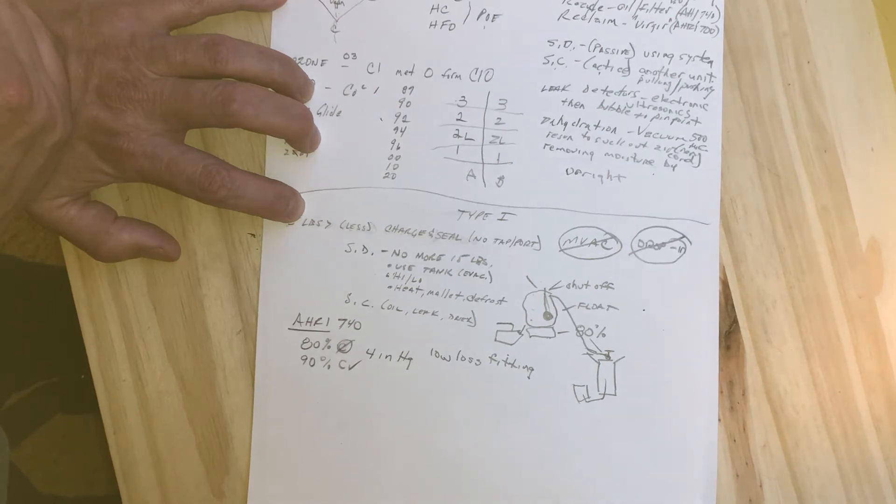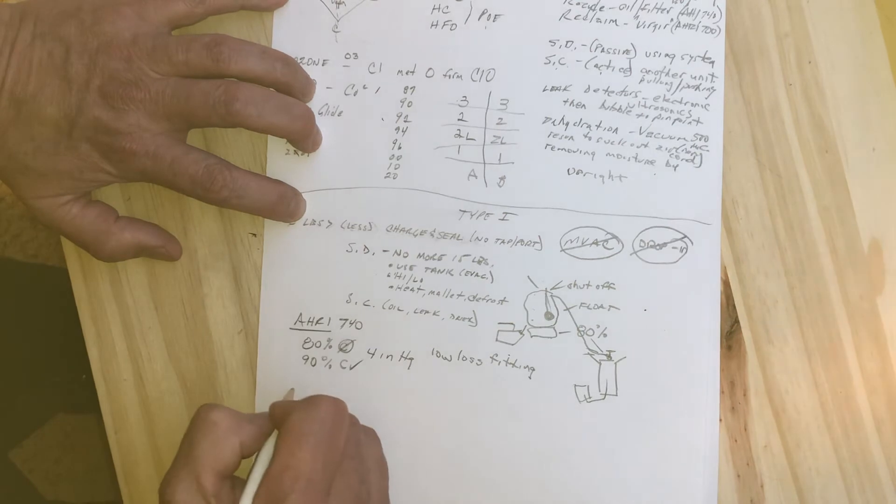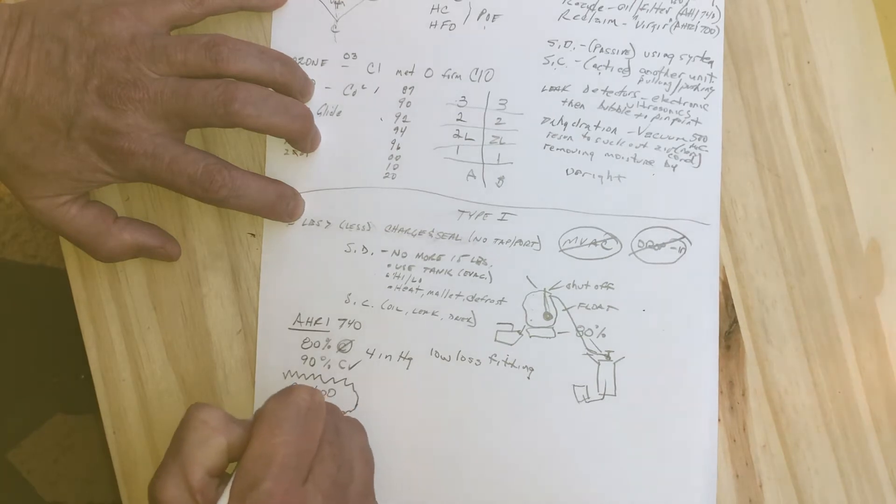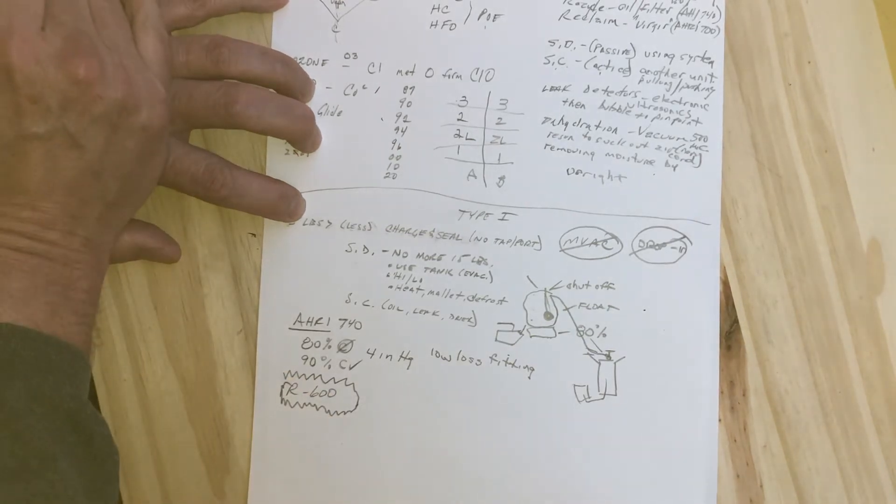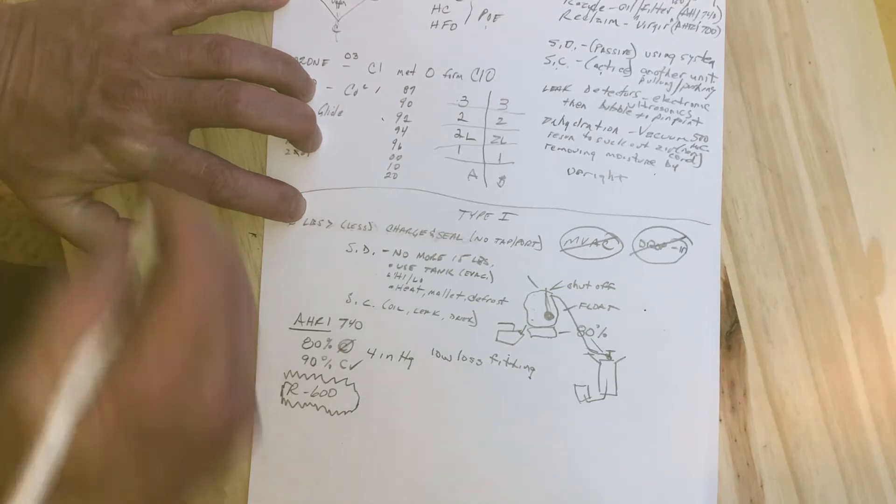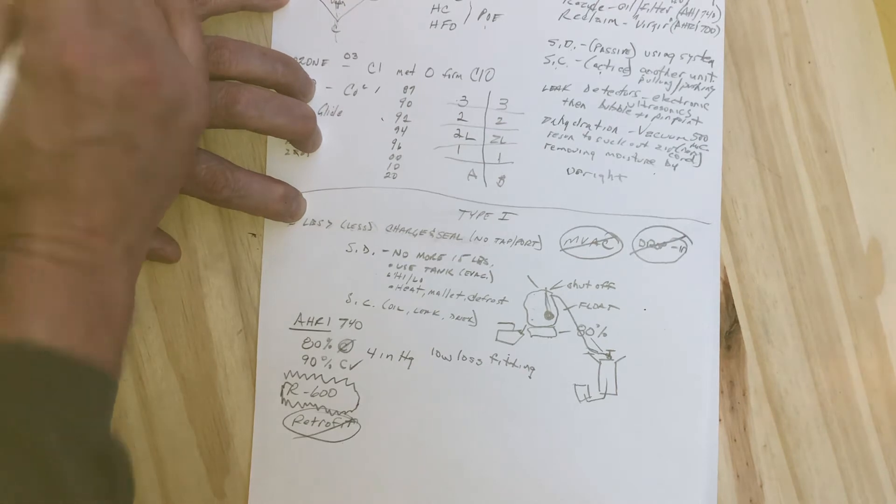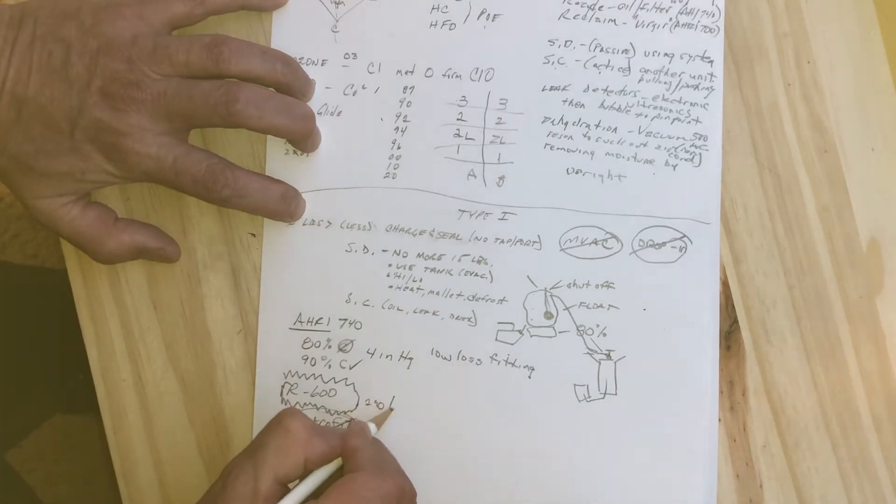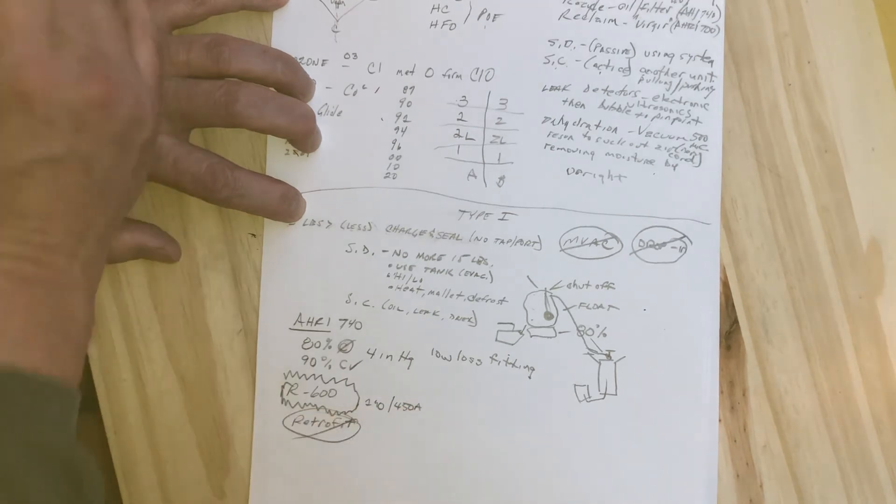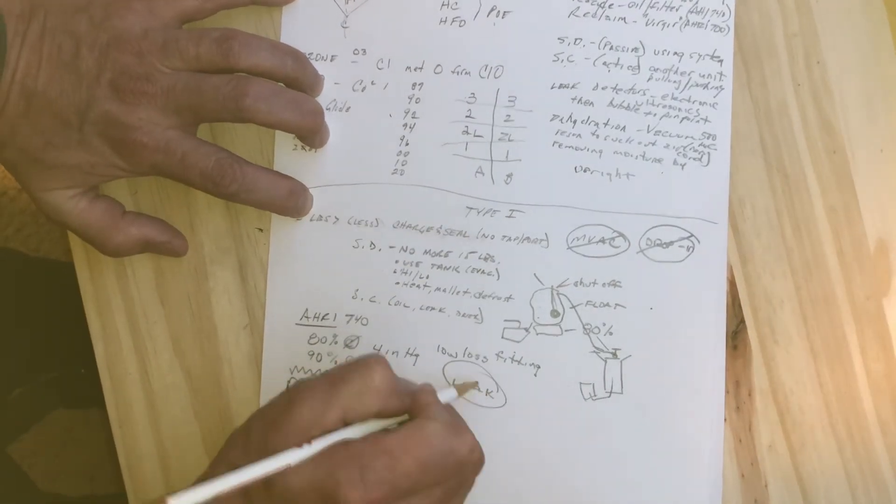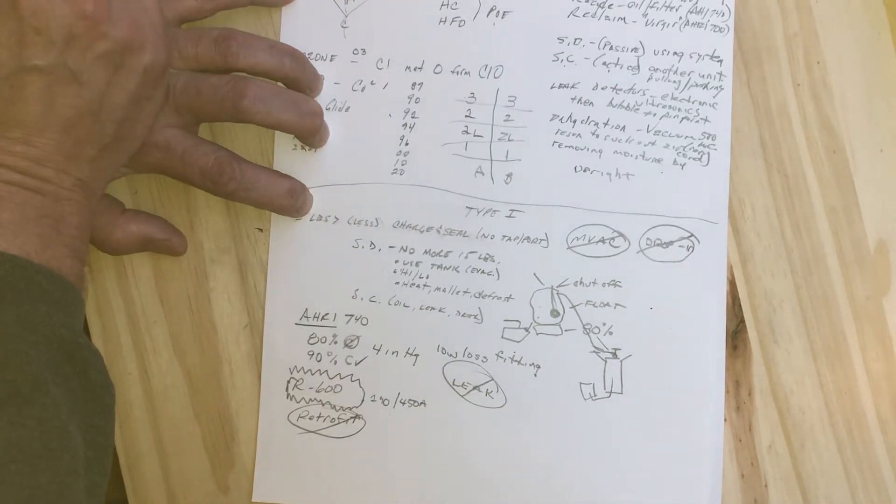If we have any R600, that's flammable. It's a hydrocarbon refrigerant, an A3 refrigerant that's highly flammable, and we can't retrofit with those. There's no retrofitting into that refrigerant. But they are being used along with 290 and 450A out in the field. The leak repair for that is going to be a little different than what we do for our regular stuff.